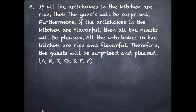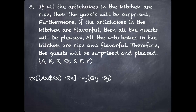Let's look at our third argument, which is the longest one we have. If all the artichokes in the kitchen are ripe, then the guests will be surprised. Furthermore, if the artichokes in the kitchen are flavorful, then all the guests will be pleased. All the artichokes in the kitchen are ripe and flavorful. Therefore, the guests will be surprised and pleased. These are complicated because you have a universal in that first line embedded in a conditional. I would represent that like this: for all X, if X is an artichoke and X is in the kitchen, then X is ripe — that is, all the artichokes in the kitchen are ripe. If that's true, then all the guests will be surprised.